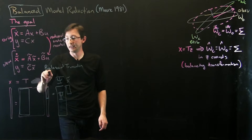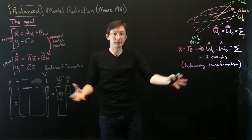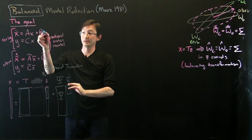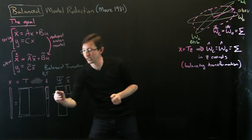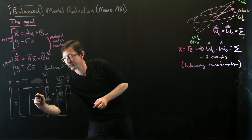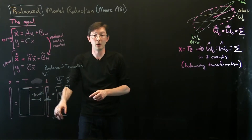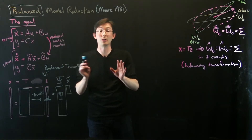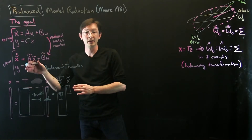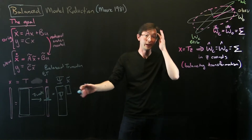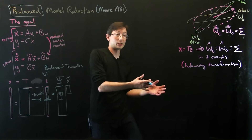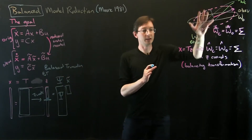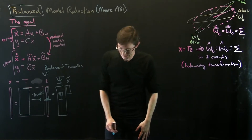This is called balanced truncation — the acronym BT — and that is really what Moore did. Moore built all of this infrastructure: how the transformations apply to Gramians, how to design the balancing transformation T. His ultimate goal was finding a reduced order model by truncating. Everything below and to the right is truncated — we only consider the dominant controllable and observable subspace. This is used everywhere as a go-to model reduction technique. In MATLAB, the bal_real command will get this balanced realization with a truncate option.